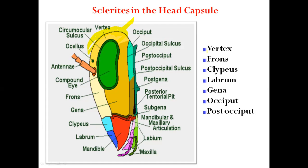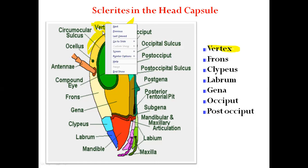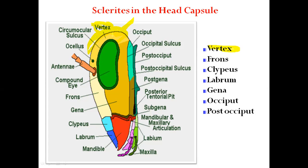The vertex is the portion of the epicranium which lies immediately behind the frons, in between the compound eyes. The vertex is the top or dorsal-middle region of the head between the compound eyes and behind the frons.